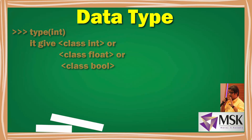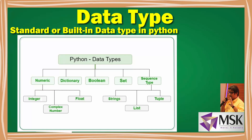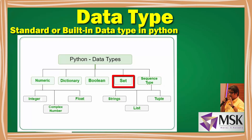So what are the standard or built-in data types of Python? We have the numeric data type, sequence data type, boolean data type, set data type, and dictionary data type.